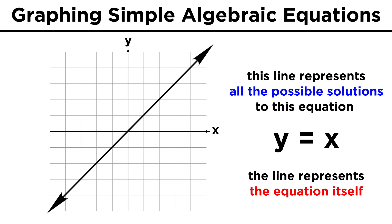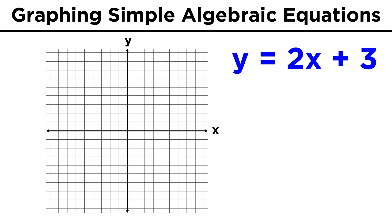So this line contains all the possible real numbers that satisfy this equation. In this way, the line represents the equation y equals x. Let's try another, y equals 2x plus 3.